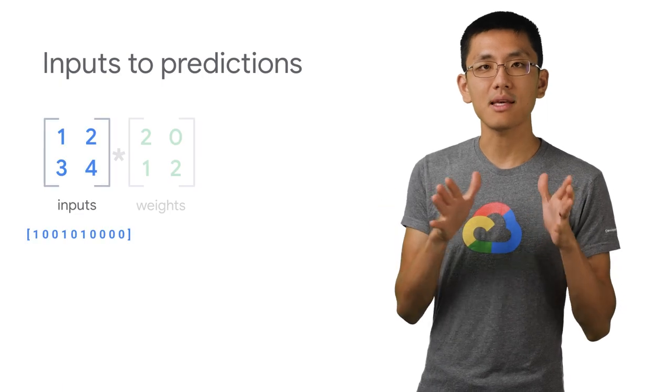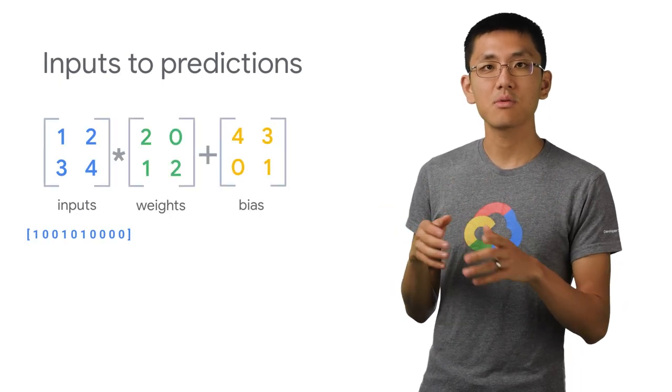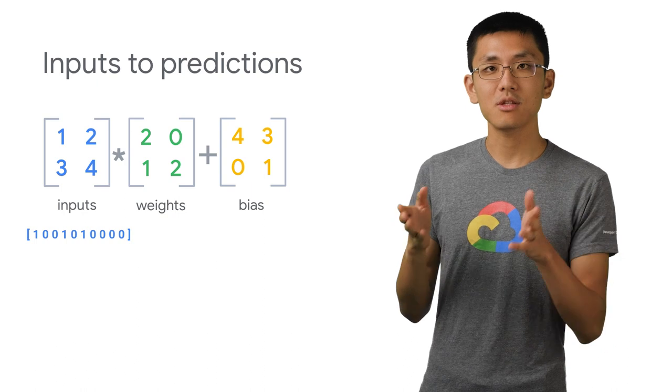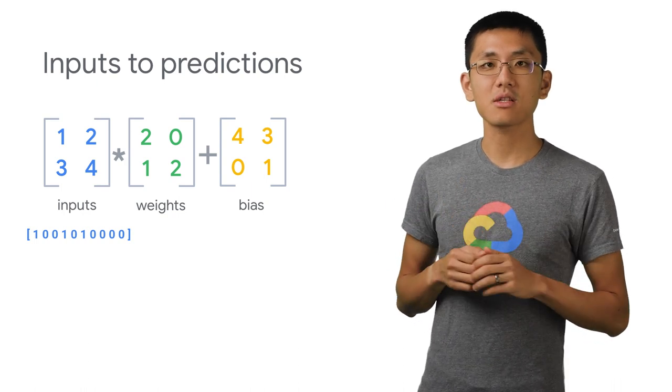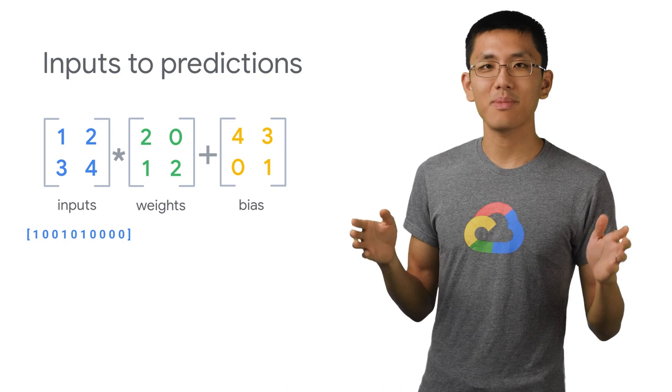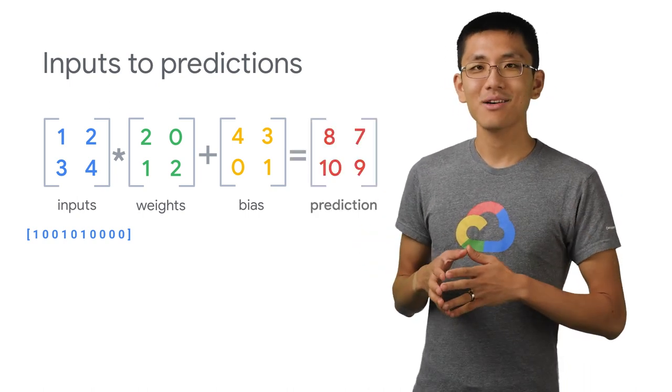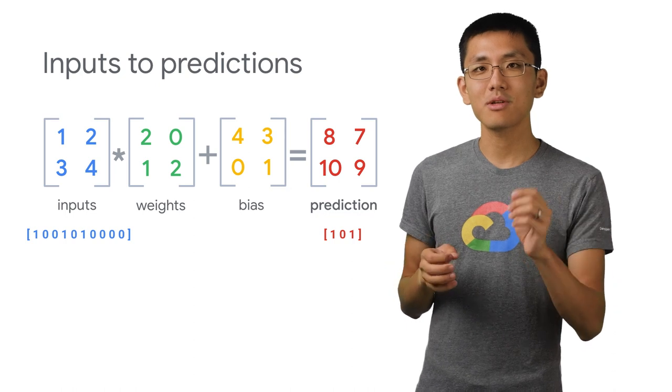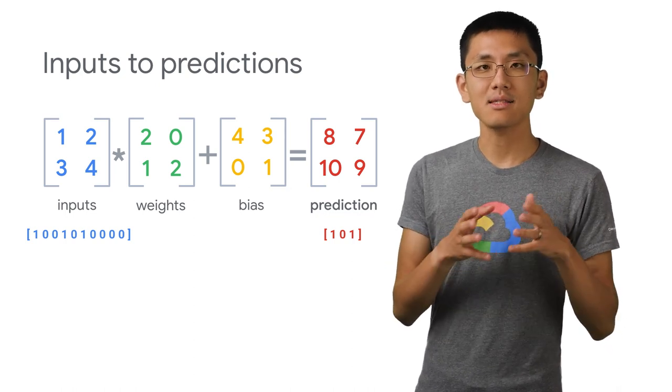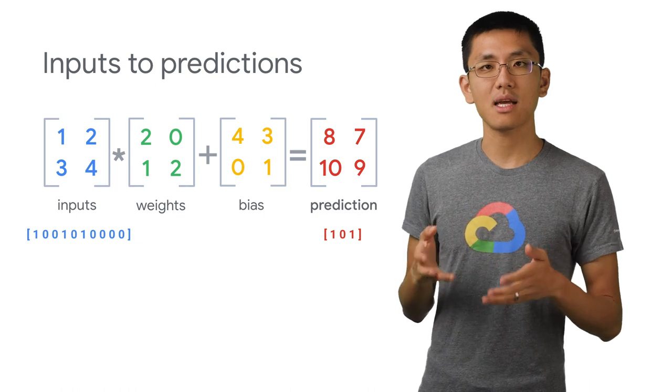Now we've turned the inputs as well as the outputs, which both used to be words into arrays of numbers. And we can let machine learning do what it does best. Map one set of numbers to another set of numbers. All the heavy lifting is done in the pre-processing, as we transformed or encoded that text into numerical representations.